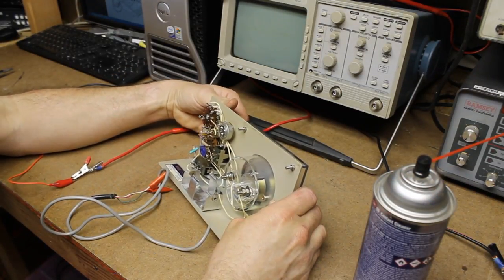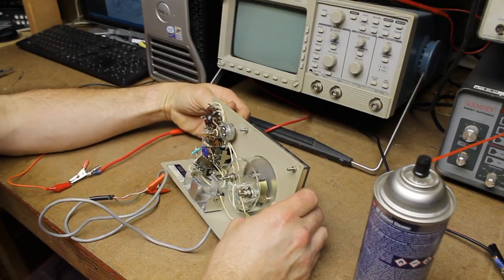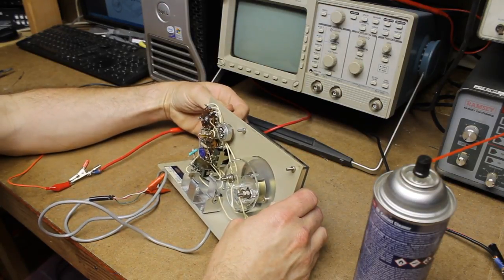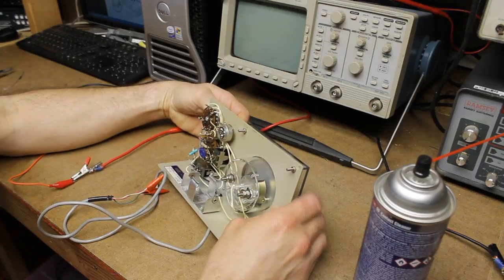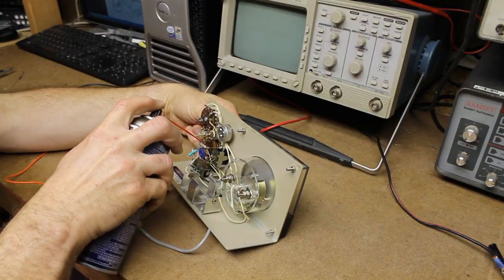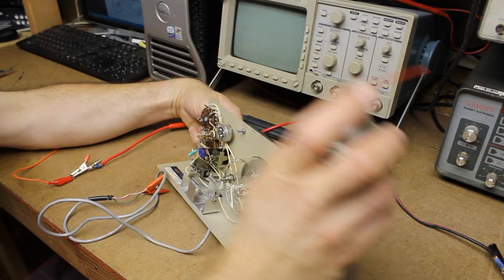To get that resolved, I can start to see a line in the tarnish where the contacts are rubbing. So maybe that'll be okay. Let's spray the other switch here.